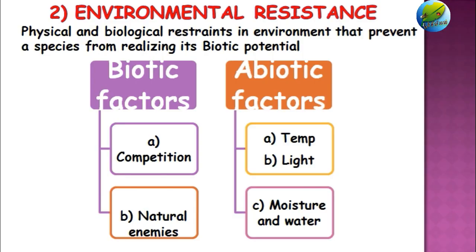Environmental resistance may be of two types: biotic factors and abiotic factors. Biotic factors consist of competition at the inter-specific and intra-specific level, where the same and different species compete for the same resource. The second biotic factor is natural enemies — predators, parasitoids, and pathogens that cause disease to insects.